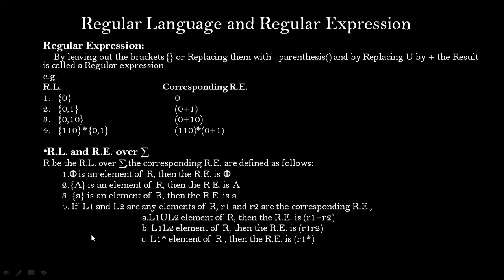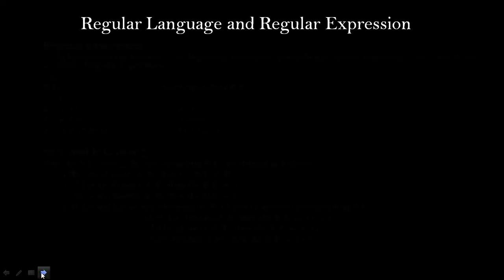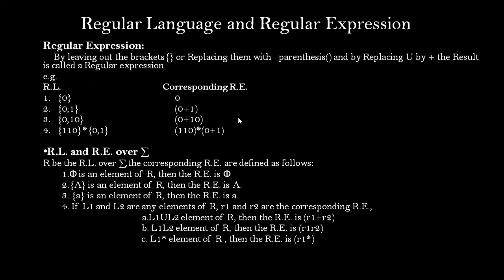To recap: regular language consists of three basic languages — null language, simple language, and empty language — and three operations: union, concatenation, and Kleene star. To convert a regular language to a regular expression, replace curly brackets with round parentheses and replace the union symbol or comma with plus. We also discussed the formal definition of regular expression over a set of alphabets Σ.